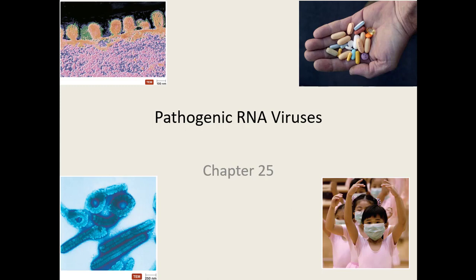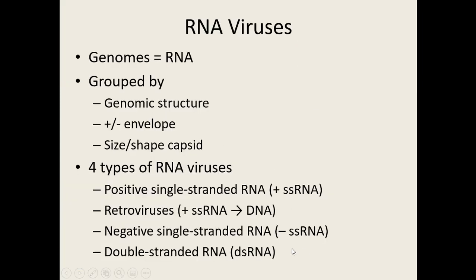Because there are so many RNA viruses, we have to group them and subgroup them. We group them by the fact that they all have RNA as their genetic material, whether they have an envelope or not, by their size, and also by the shape of their capsid.